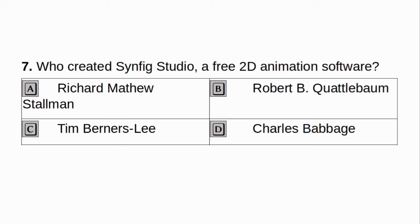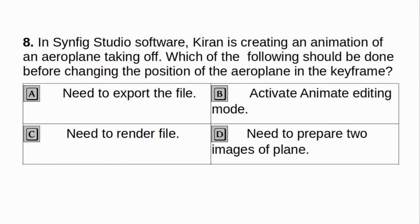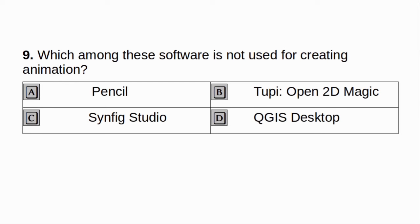Who created Synfig Studio, a free 2D animation software? A. Richard Matthew Stallman. B. Robert B. Kotelbaum. C. Tim Berners-Lee. D. Charles Babbage. Answer: B. Robert B. Kotelbaum. In Synfig Studio software, Kiden is creating an animation of an aeroplane taking off. Which of the following should be done before changing the position of the aeroplane in the keyframe? A. Need to export the file. B. Activate the animated editing mode. C. Need to render file. D. Need to prepare two images of a plane. Answer: B. Activate the animated editing mode.